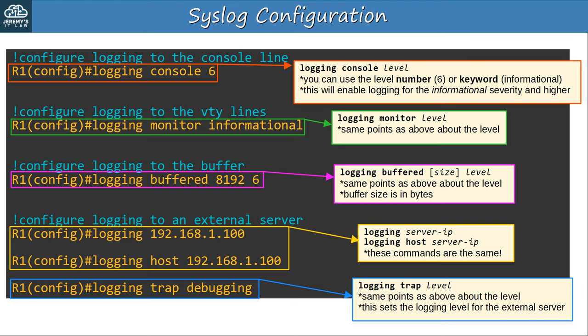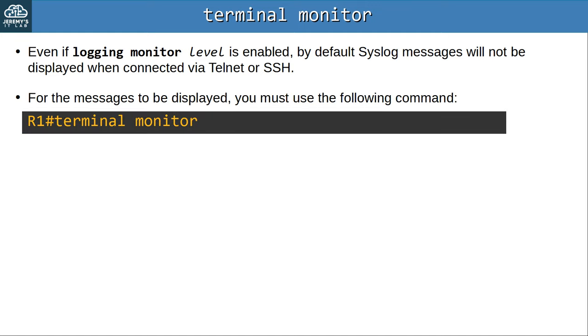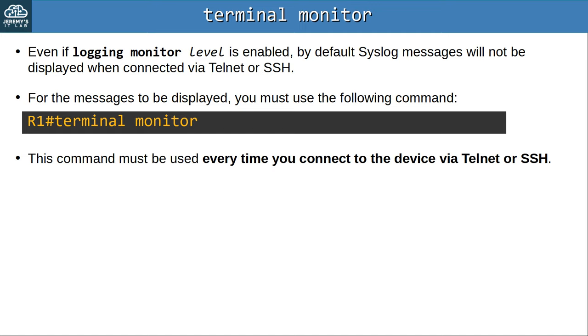That's how you enable syslog logging to different locations and specify which levels of messages should be displayed. Because syslog configuration isn't specified in the exam topics, you probably don't have to memorize these commands for the exam. However, I will include flashcards for them, and you can get some practice in the following lab video. Even if logging monitor is enabled, by default syslog messages will not be displayed when connected via telnet or SSH — you also need the 'terminal monitor' command from privileged exec mode. This command must be used every time you connect via telnet or SSH.